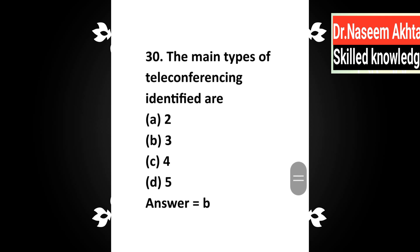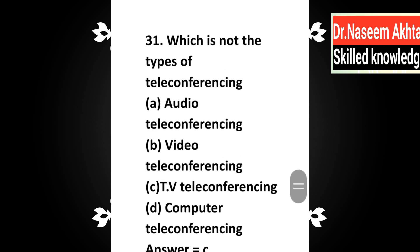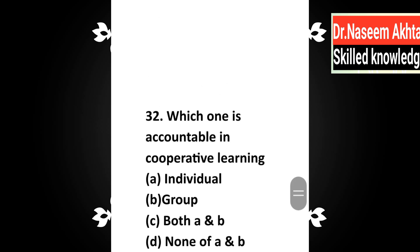Question 30: The main types of teleconferencing identified are — a) 2, b) 3, c) 4, d) 5. Correct answer is B: 3. The main types of teleconferencing identified are 3. Question 31: Which is not the type of teleconferencing — a) audio teleconferencing, b) video teleconferencing, c) TV teleconferencing, d) computer teleconferencing? Correct answer is C: TV teleconferencing.